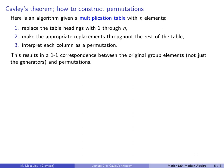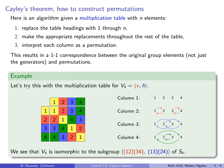This results in a one-to-one correspondence between the original group elements, not just the generators, and permutations. Let's do an example. Here is the multiplication table of V4. So, before the replacements, this was E, V, H, and VH.